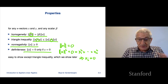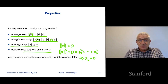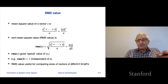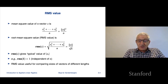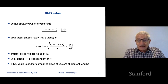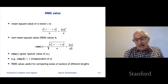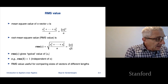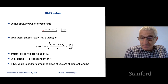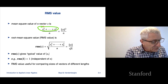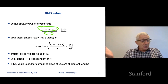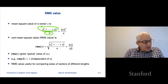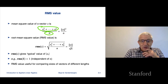So those are some very basic properties of the norm. So far we haven't done anything with the norm that would be of interest, but we'll get there. A closely related quantity is called the RMS value, which stands for root mean square — it's another measure of the size of a vector. The mean square value of a vector is the sum of the squares divided by n, which is the norm squared of x divided by n.